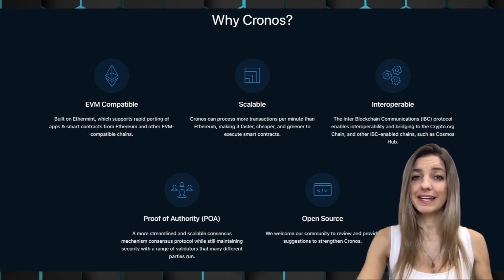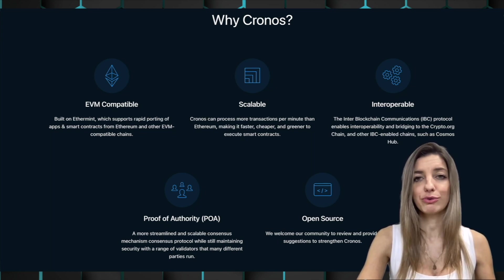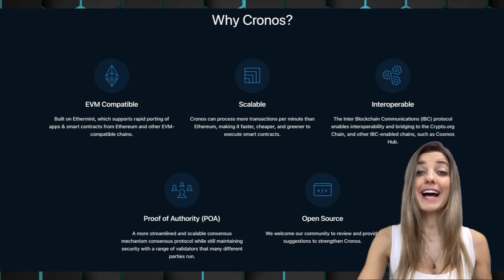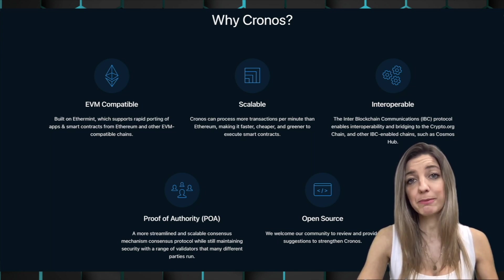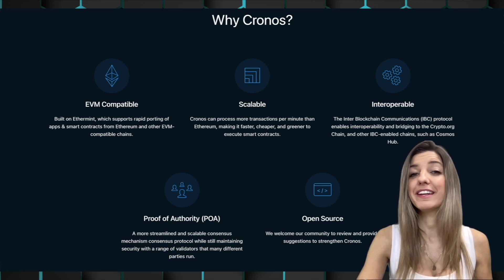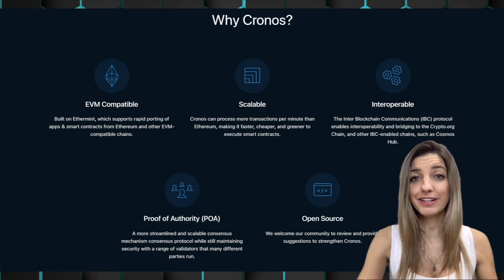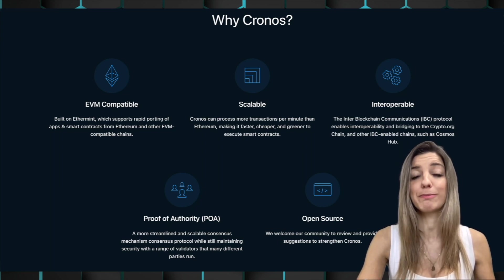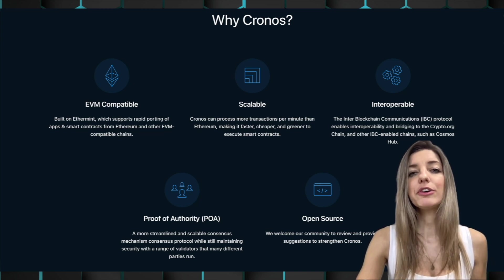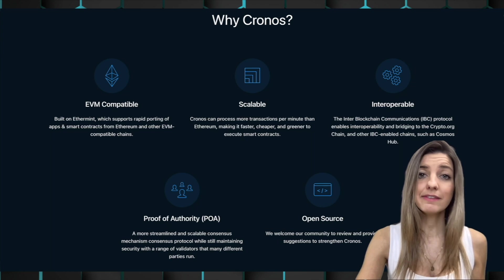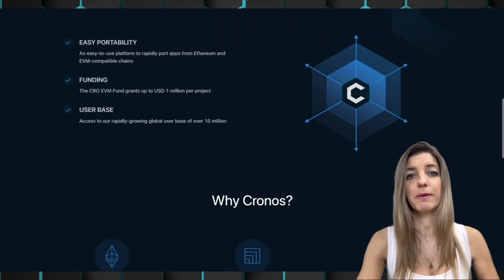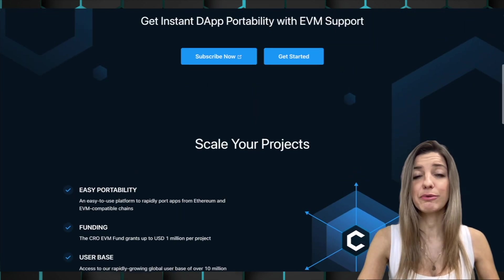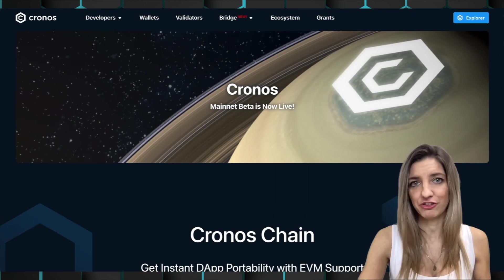ETH developers can easily deploy apps on the Kronos sidechain. Regarding transaction fees, Kronos can process more transactions per minute than Ethereum, making it faster, cheaper, and greener to execute smart contracts, as they claim on their website. The block time is six seconds. The exact finality — meaning the time until the block containing your transaction is actually confirmed — has not been published yet.